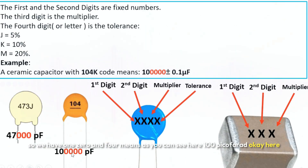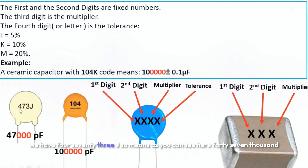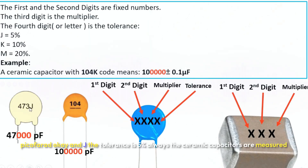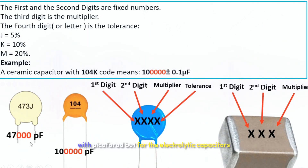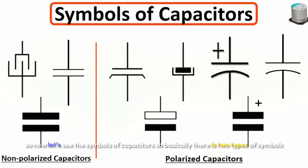Here are some examples: '104' means 100 picofarad. '473J' means 47,000 picofarad with 5% tolerance. Ceramic capacitors are always measured in picofarad, but electrolytic and tantalum capacitors use microfarad as the unit.